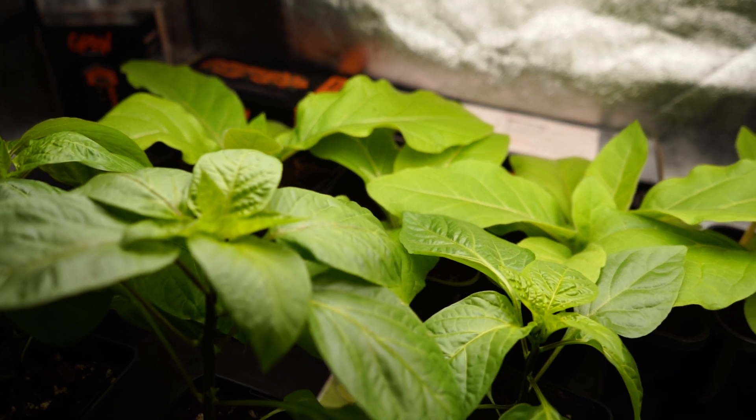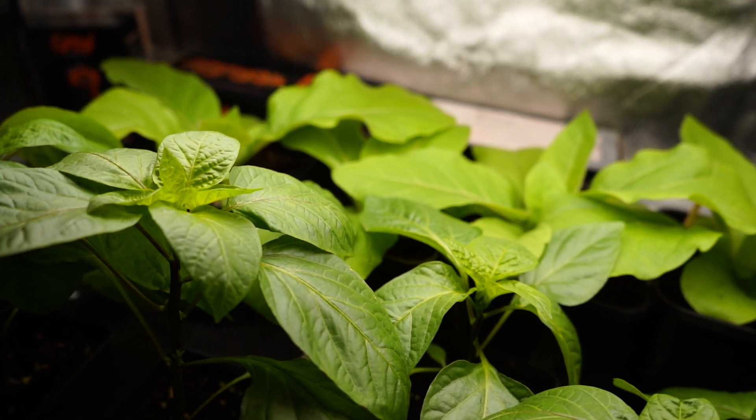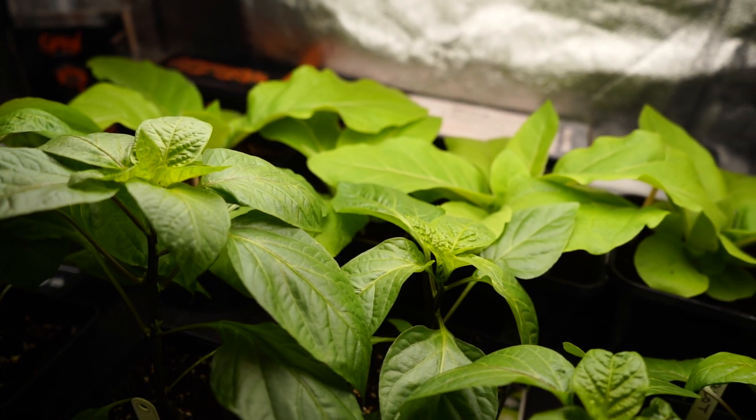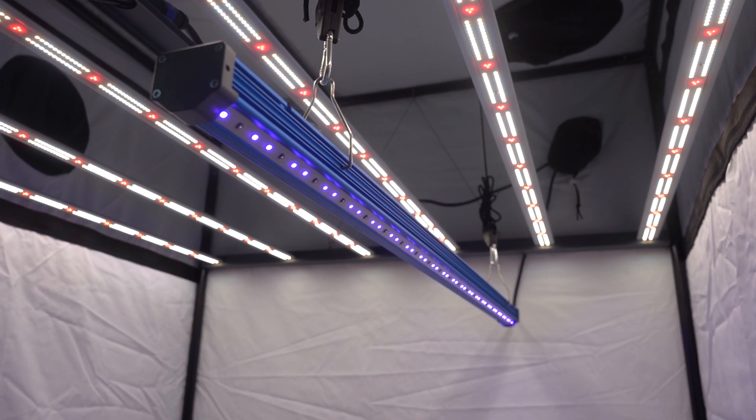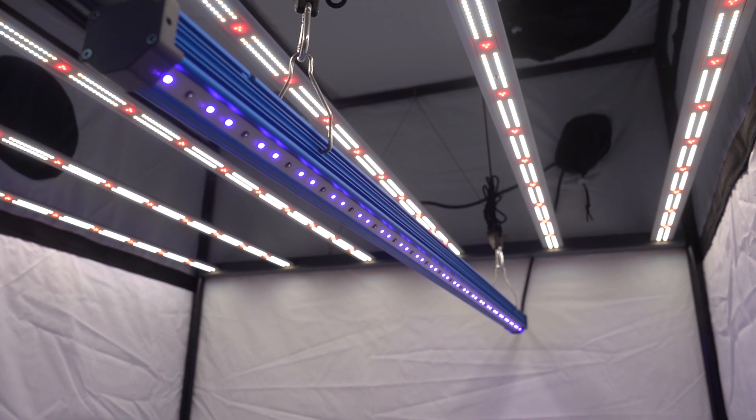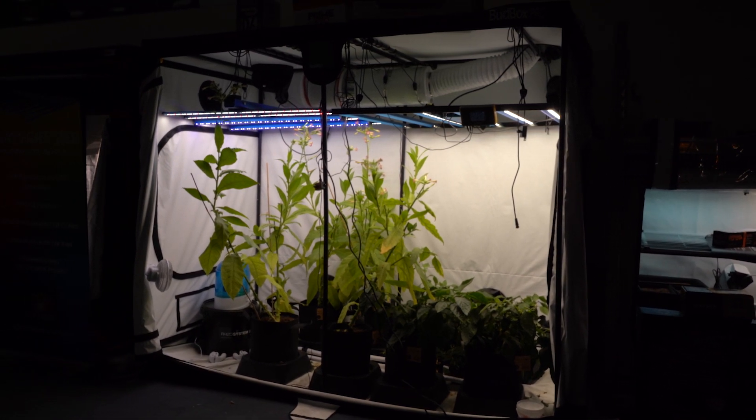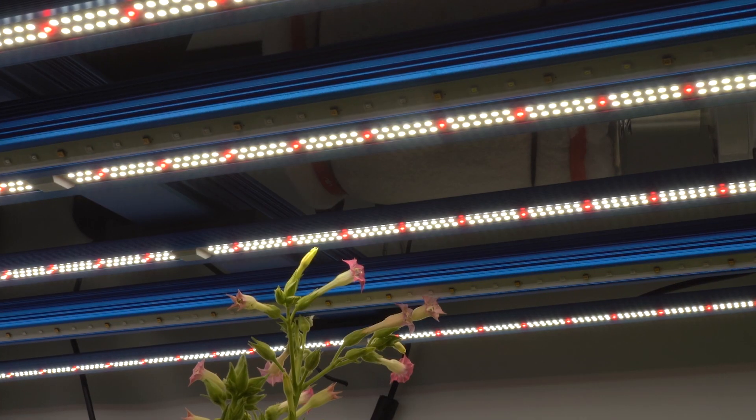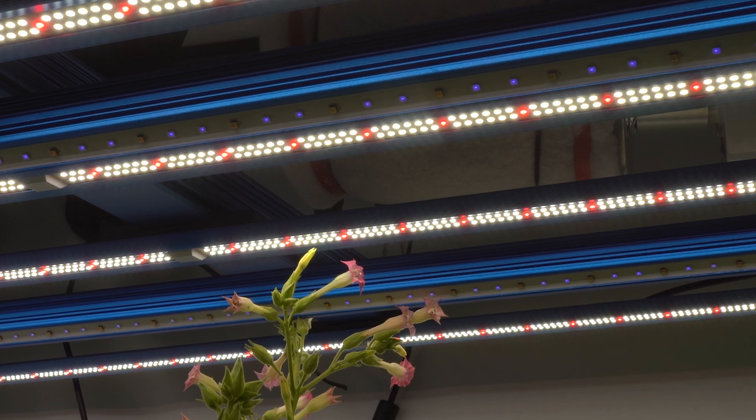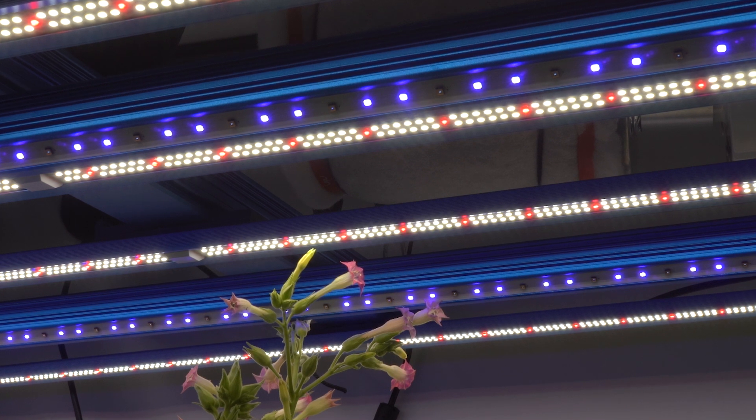This is why some growers have the caution to not expose their plants for more than 15 minutes at a time. But it is possible to acclimatize your plants into producing more essential oils and withstand longer periods of time under UV light. Starting with 5 minute increments, it's possible to train your plants over time to easily manage 2 hours under the UV LED bar.